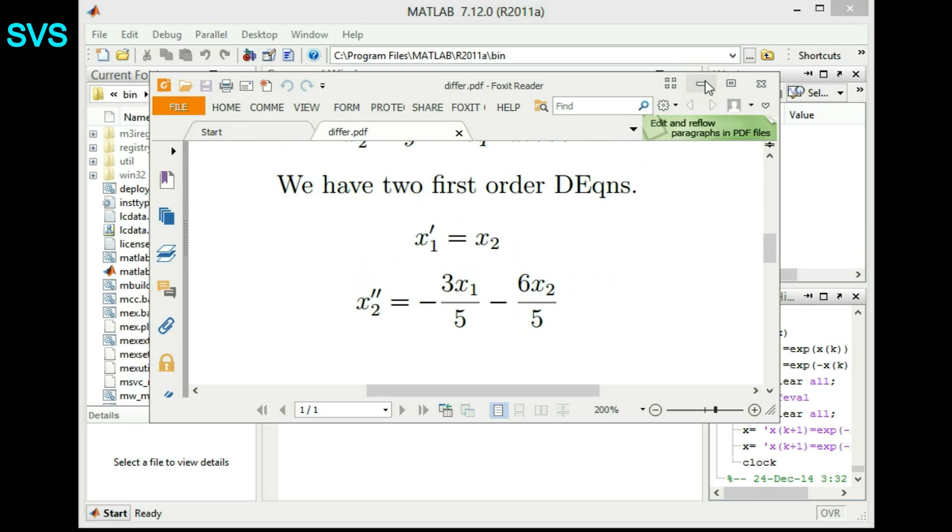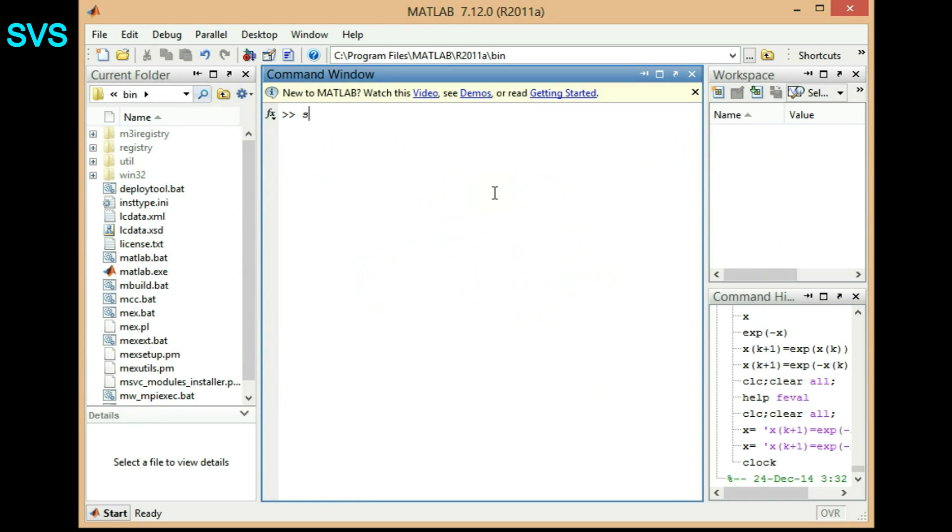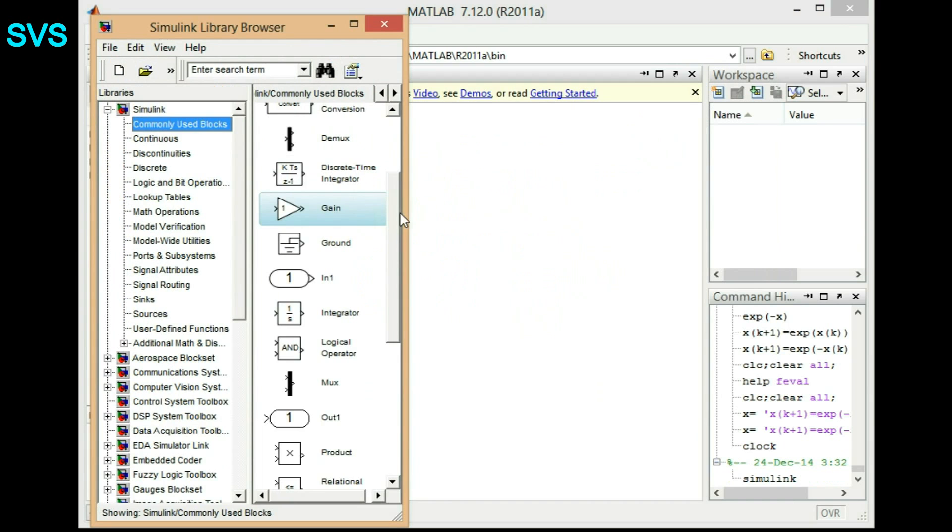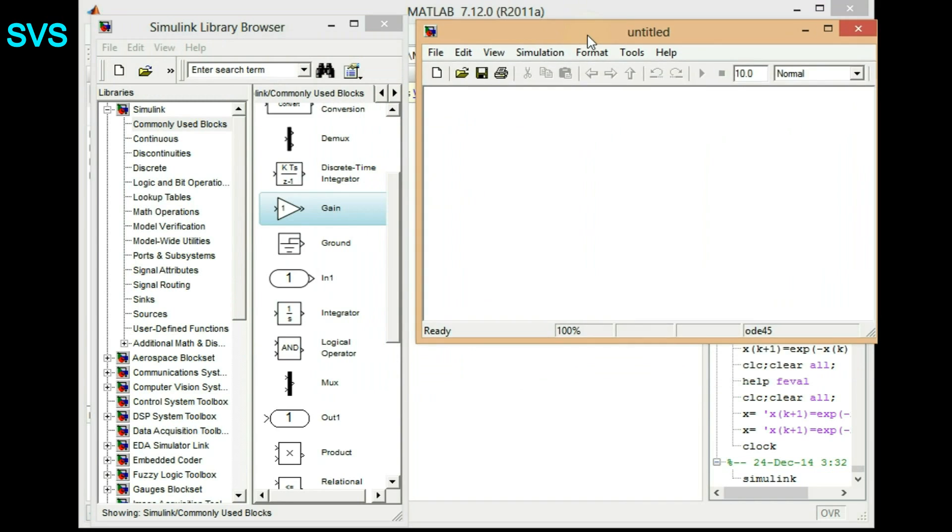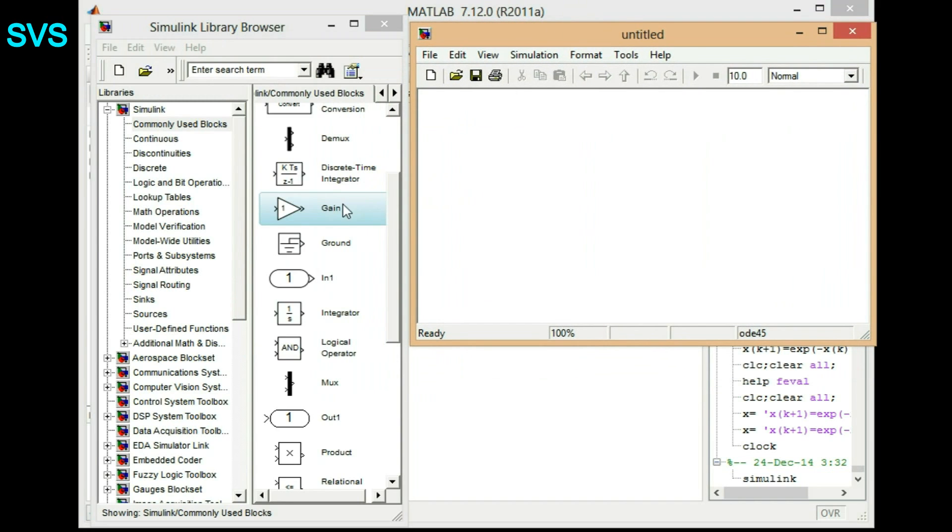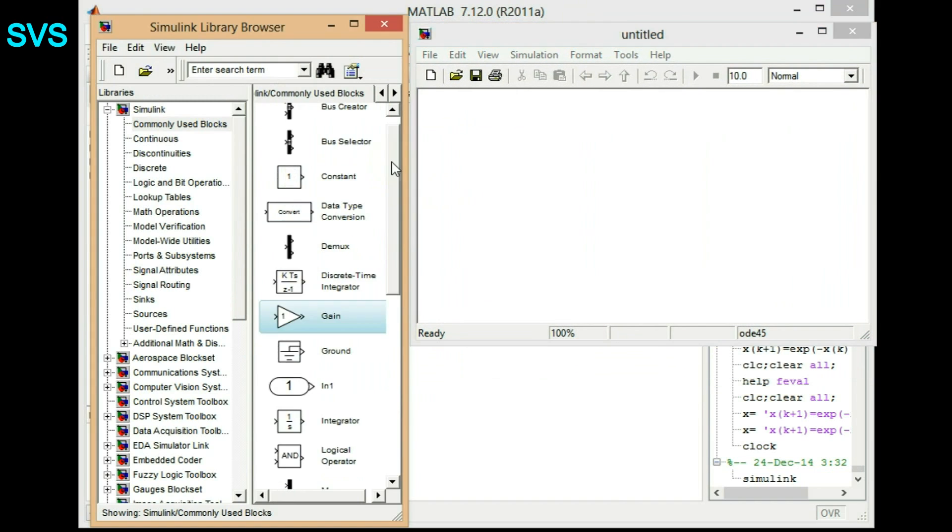So we'll be requiring some gains and two integrators so let's see how to assemble them. We'll type in Simulink and in Simulink browser we'll start our new file. So we want minimum of two integrators because we have two first-order differential equations right now.